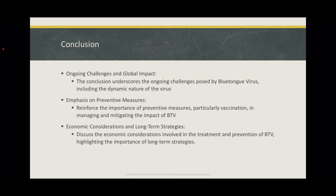In conclusion, the ongoing challenges posed by blue tongue virus include the dynamic nature of the virus, the emergence of new serotypes, and the evolving patterns of its vectors. The global impact of BTV on livestock populations and the economic ramifications for affected regions are significant. The importance of preventative measures, particularly vaccination and management, in mitigating the impact of BTV is very important. Timely and routine vaccination to build immunity within livestock populations and reduce the incidence and severity of the disease is also essential.